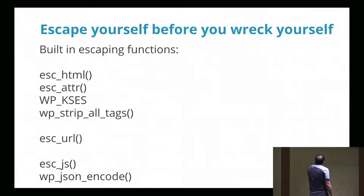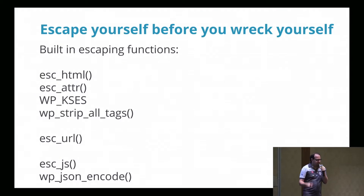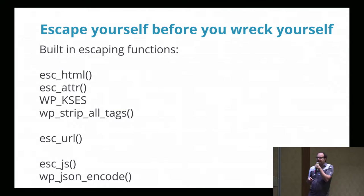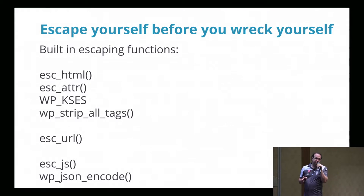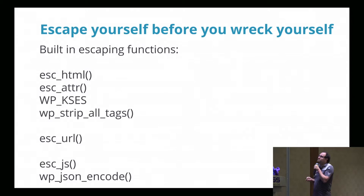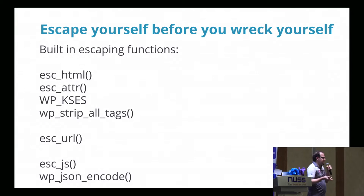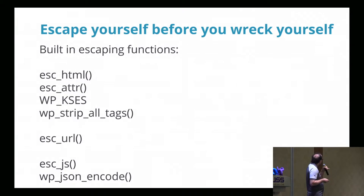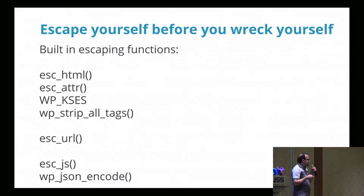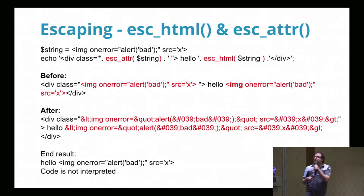There are built-in escaping functions in WordPress which help you do a lot of things. One very useful thing about WordPress escaping functions is that they'll never double-encode. So you can always just run something through them again if you're not sure if it's already encoded. There are a few functions: esc_html, esc_attr, wp_kses — which is a series of functions — wp_strip_all_tags, esc_url, esc_js, and wp_json_encode. I'm going to talk about these in more detail.